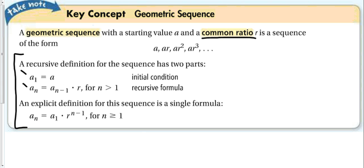An explicit definition is similar to our arithmetic formula, but we have multiplication, right? We have a multiplication and it is r to the n minus 1 power. So as we are going up in the sequence, if we are looking for the thirtieth term, we take the first term times the common ratio to the n minus 1 power.